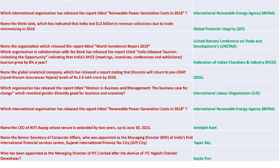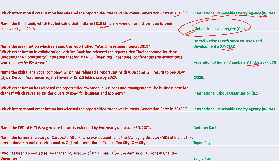IRENA released the report 'Renewable Power Generation Costs'. The think tank Global Financial Integrity indicated India lost 13 billion dollars in revenue. UNCTAD released the World Investment Report. The Federation of Indian Chambers of Commerce and Industry in collaboration with Yes Bank released the India Inbound Tourism Report. CRISIL released a report stating that DISCOMs will return to their pre-usual level of 2.6 lakh crore by 2020.